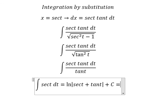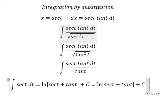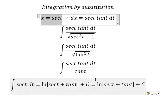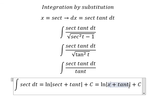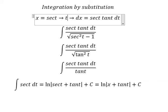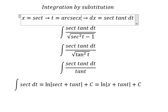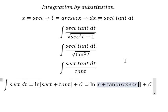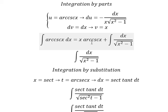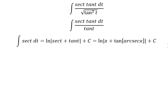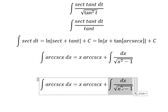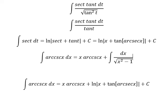We substitute back using t and c. Since secant of t equals x, we change back into x. We have t equals arcsecant of x, so we substitute this in for t and go back to the original expression. The final result of this integral gives us our answer, plus the constant c. Thank you for watching.